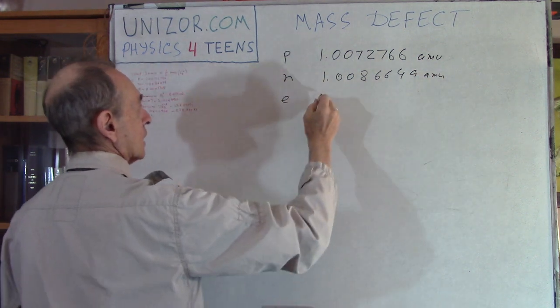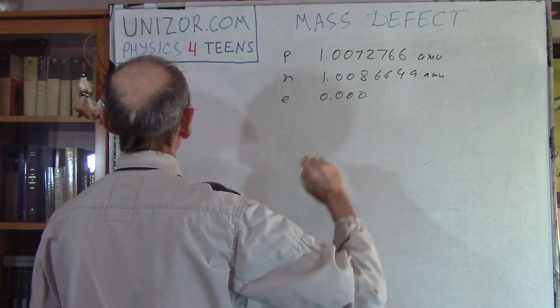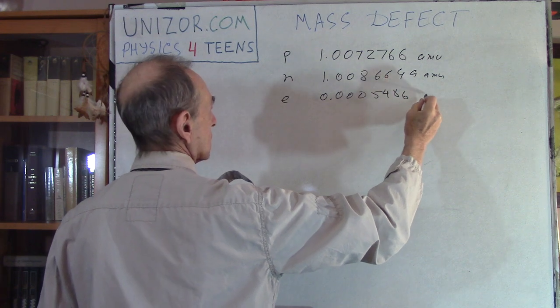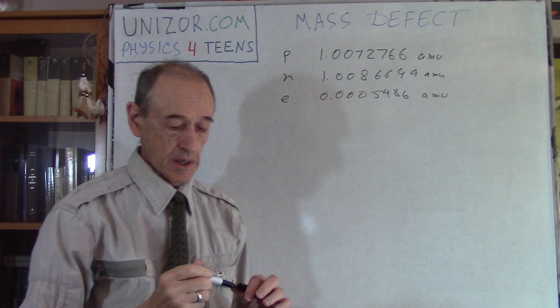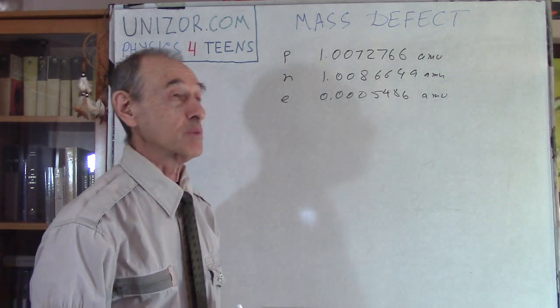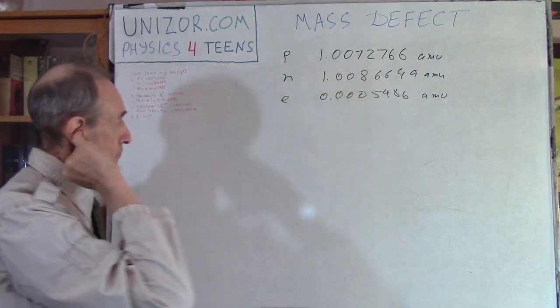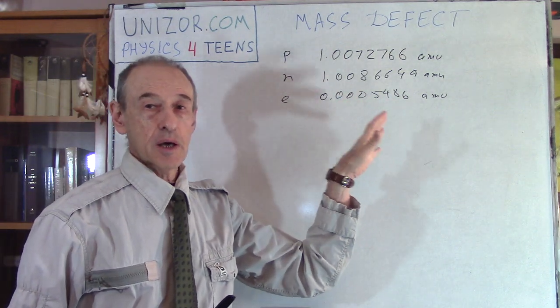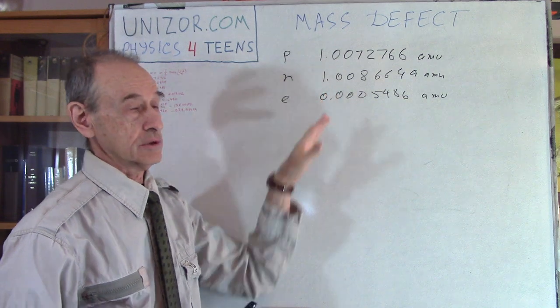Mass of neutron is 1.008649 AMU. And electron has a mass of 0.0005486 AMU. As you see, electron is much, much smaller. It's actually less than one two thousandths of the mass of the proton. These are exact measurements of the masses of proton, neutron, and electron.